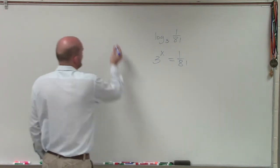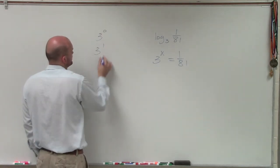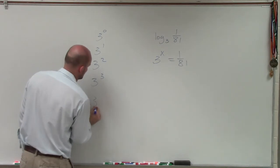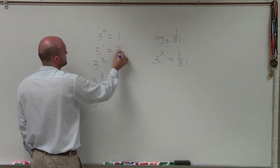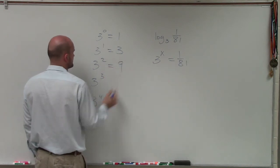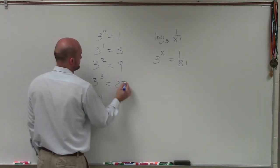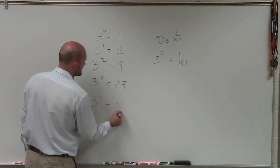So if I start with my whole numbers, I go 3 to the 0, 3 to the first, 3 squared, 3 cubed, 3 to the fourth. 3 to the 0 is 1, 3 to the first equals 3, 3 squared equals 9, 3 cubed equals 27, 3 to the fourth equals 81.